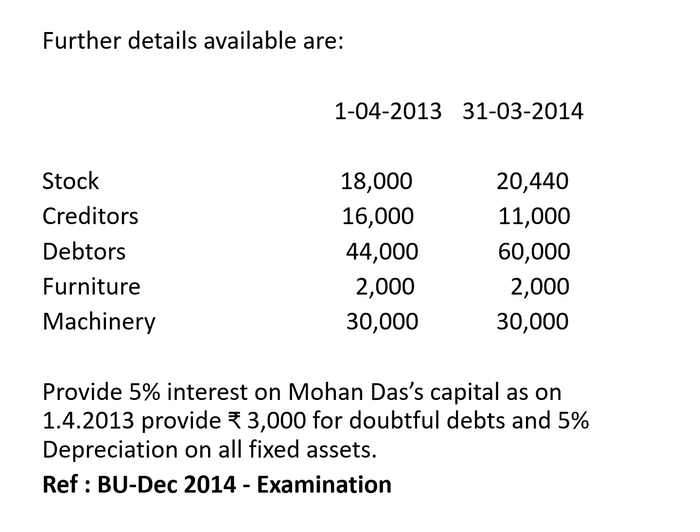In the adjustments, provide 5% interest on Mohandas's capital as on 1st April 2013. This interest on capital is an expenditure and will be taken to the P&L account as 'to interest on capital.' Once you prepare the opening statement, find out the opening capital, and on that opening capital balance you must provide 5% as interest on capital.